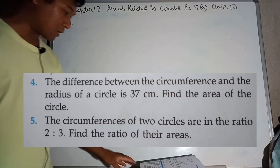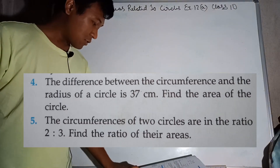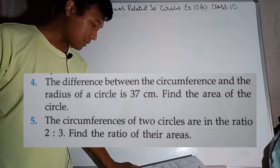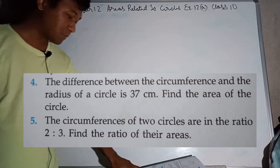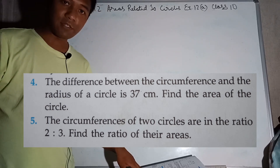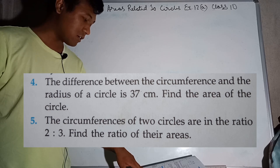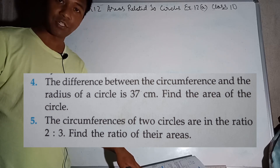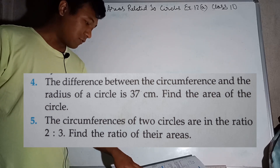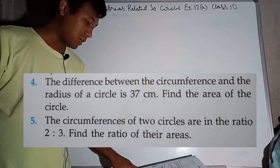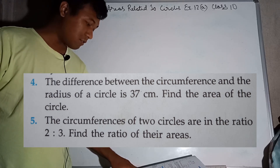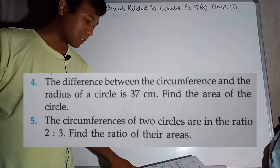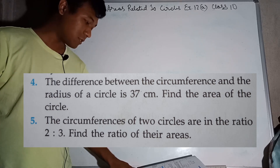Question number 4: The difference between the circumference and the radius of a circle is 37 cm. The difference means subtraction — so circumference minus radius equals 37 cm.